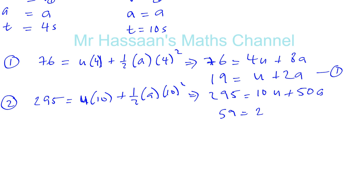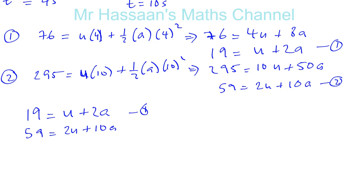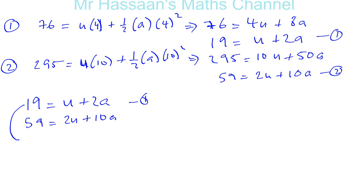That's as simple as it can get. So we have two equations in the simplest forms which I can use now to solve simultaneously. We have 19 equals U plus 2A, that's equation one. And we have 59 equals 2U plus 10A. So let's take equation one and multiply it by 2. You've got 38 equals 2U plus 4A. I can solve simultaneously and get our answer.